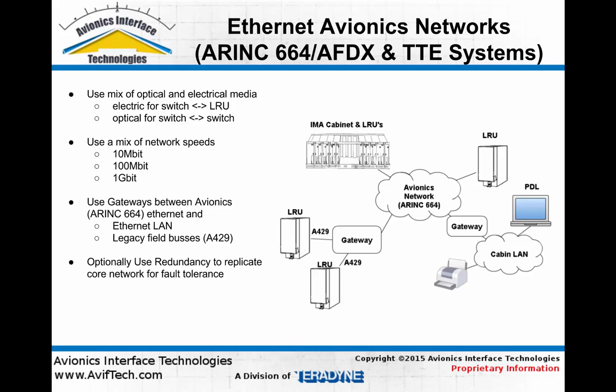Another option commonly used in ARINC 664, AFDX, and time-triggered ethernet networks is the use of redundancy. An individual LRU would connect to two identical networks and transmit and receive all ethernet frames simultaneously in redundancy. This allows for one whole network to go down and for the overall system to continue to operate.